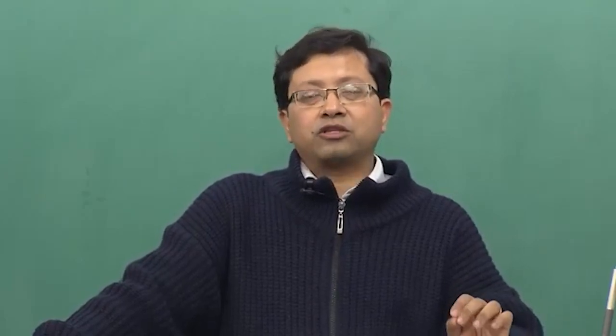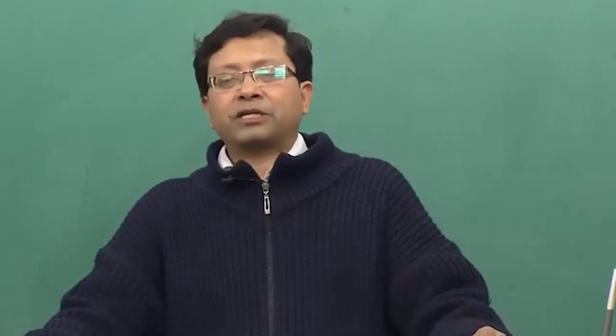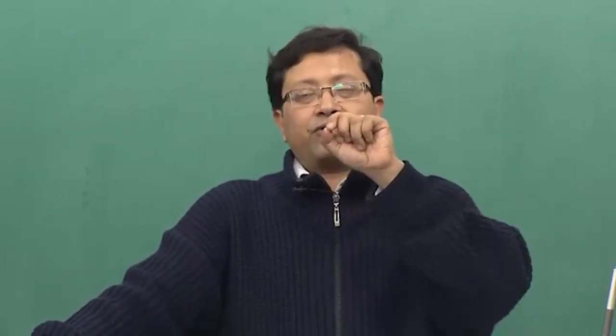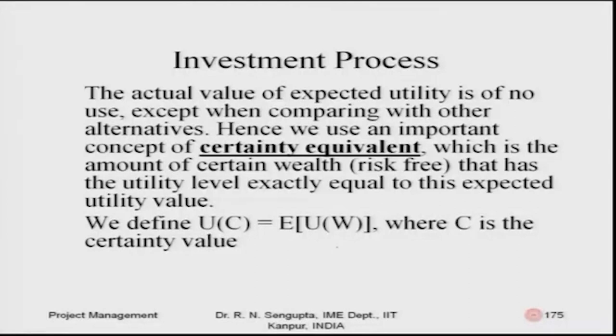In the decision tree examples, when expected values are the same you use variance for comparison. If you want to compare risk and return, you take the ratio of return to risk, rank from highest to lowest, and take the highest. The certainty equivalent is the amount of certain risk-free wealth — it is the utility value of C, a constant value that gives me the same expected value as coming from a gamble. Here a gamble means a decision.